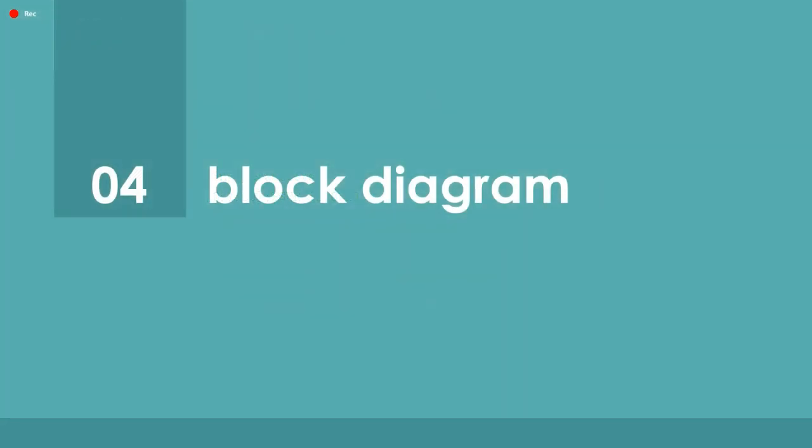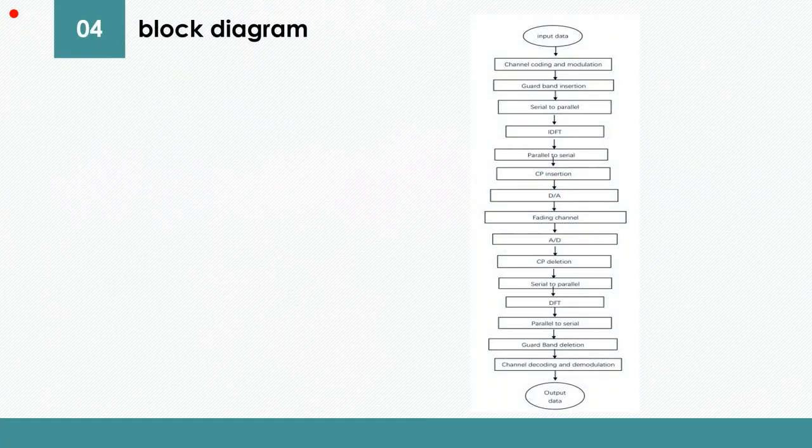I'm going to show you the fourth part, block diagram. I've drawn a block diagram by myself for the OFDM system, but my block diagram is for the paper, so it cannot be shown well in the PowerPoint presentation. So I found a block diagram from the internet, which is the same as mine, and I will show it first.